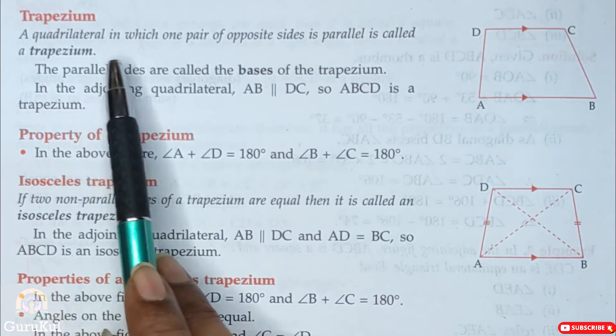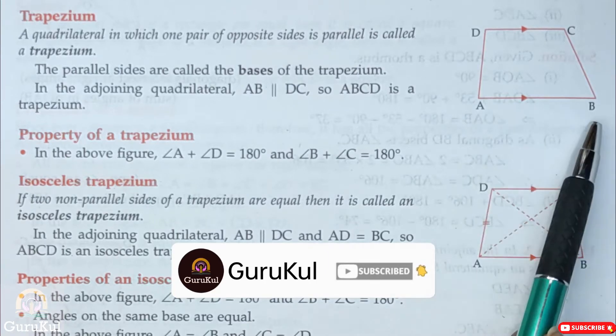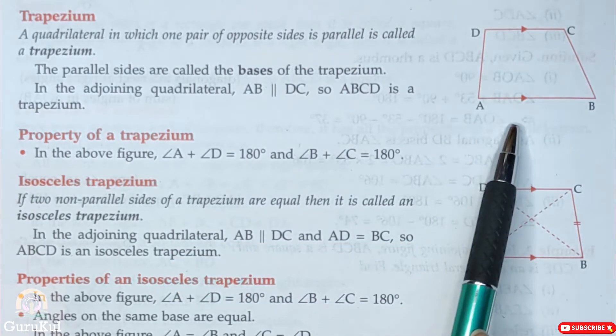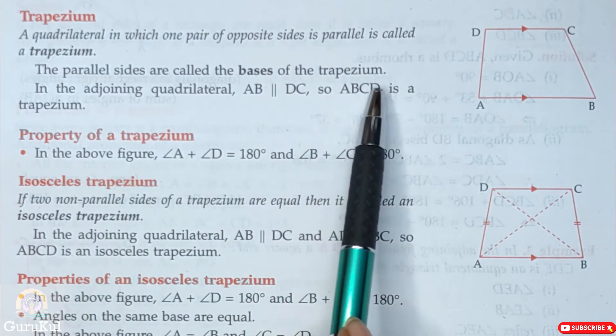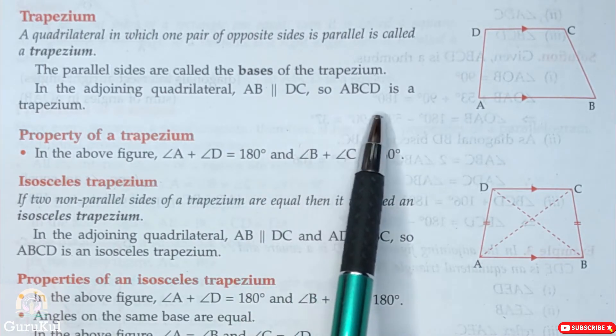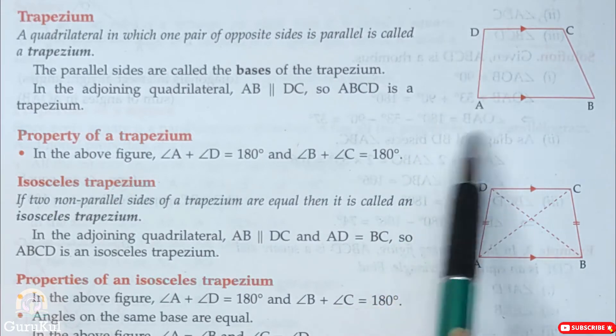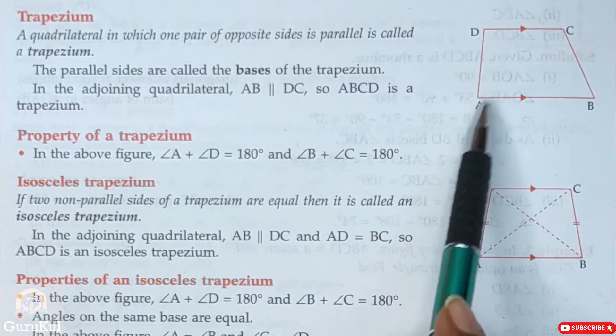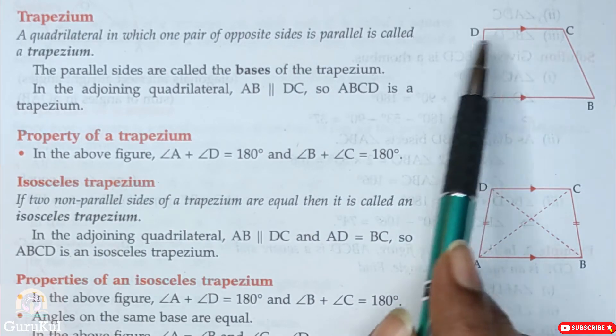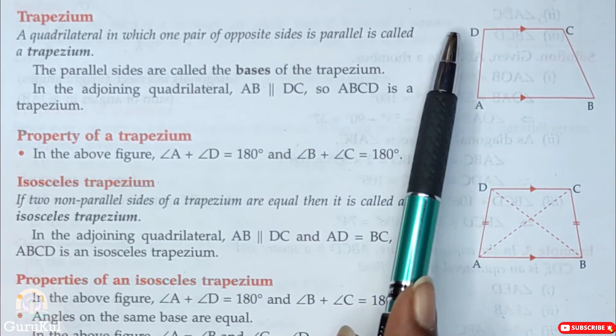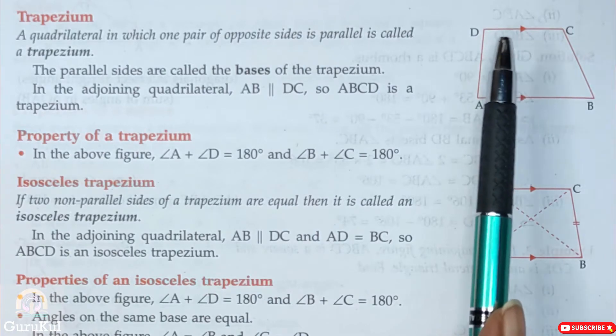Next is trapezium. A quadrilateral in which one pair of opposite sides is parallel is called a trapezium. As you can see, AB is parallel to DC. See, arrow is given. But that is not the case in DA and BC. So the parallel sides are called the bases of the trapezium. And AB is parallel to DC. So ABCD is a trapezium. So DA is a transversal line passing through two parallel lines AB and DC. Right? So here, both angles should be between the parallel lines. And also on the same side. And the sum of both should be 180 degrees. And it should be inside the trapezium. Not that if the angle measurement is given outside then you include that. To make sure that they are on the same side and that too within the trapezium.